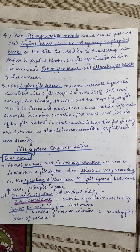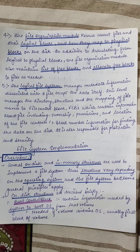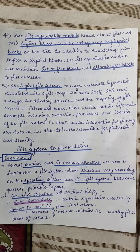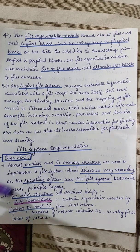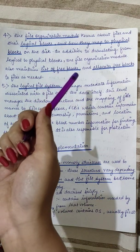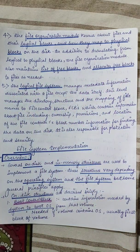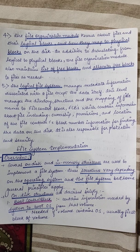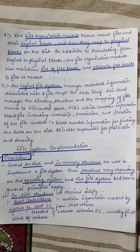Above the basic file system we have the file organization module. The file organization module knows about files and their logical blocks and how they are going to be mapped to physical blocks on the disk — it acts as a communication layer between the logical location in software and the physical location stored on disk. In addition to translating logical to physical blocks, the file organization module maintains a list of free blocks and allocates those free blocks to files, providing information about which disk spaces are available whenever a new file arrives.